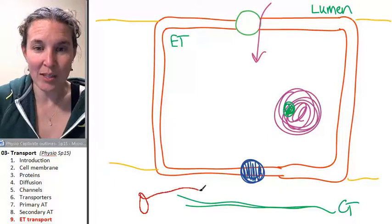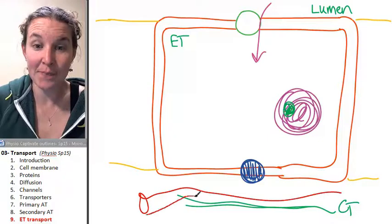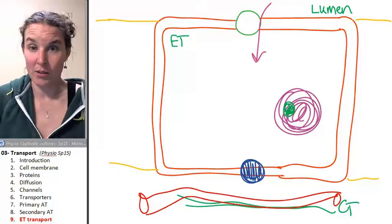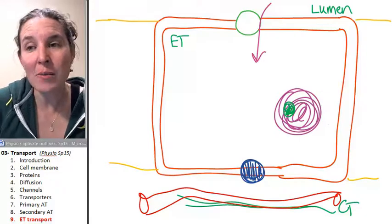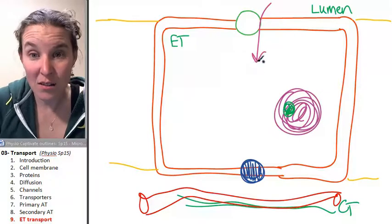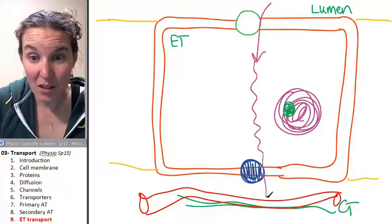for example, into, let's just say, the bloodstream—this is a blood vessel. Of course it is. If I want to do that, how many cell membranes am I going to have to pass?